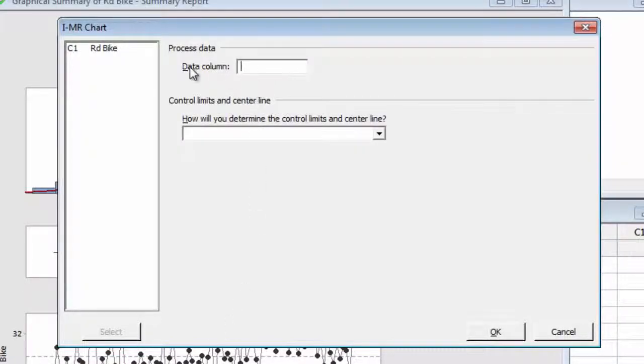In the dialog box, select the Road Bike Data column. If you're monitoring a process with established control limits, you can enter them in the Assistant. Or, as we'll do in this case, you can simply let the Assistant estimate them from the data.